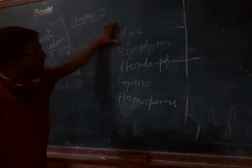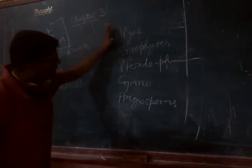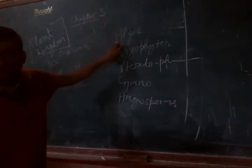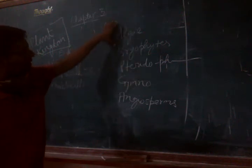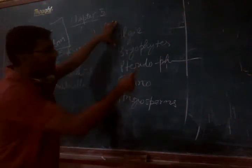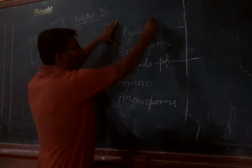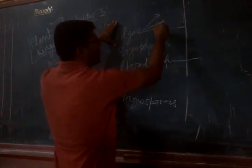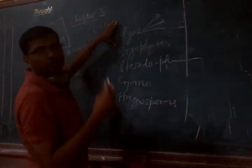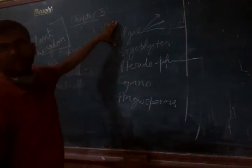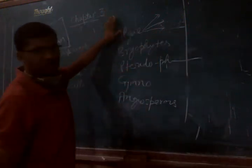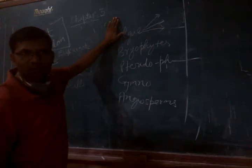We will see what are the different features of algae, how they are different from the bryophytes, what are the different categories or different kinds of algae. So we will see different kinds of algae — what are red algae, what are brown algae, what are green algae — and all those things, and we will study how useful they are to us.